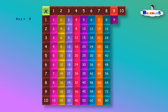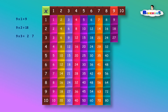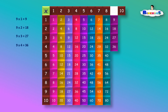9 times 1 is equal to 9. 9 times 2 is equal to 18. 9 times 3 is equal to 27. 9 times 4 is equal to 36. 9 times 5 is equal to 45.